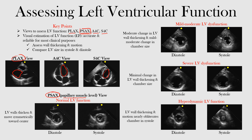Normal LV function looks like this. Notice the LV cavity in diastole — it's open; the left ventricle fills up with blood. Then in systole, when it's squeezing, it collapses and the cavity gets smaller. That's normal. The LV wall thickens and moves more centrally toward the center of the left ventricle as it pumps blood out — so it goes from larger in diastole to smaller in systole.